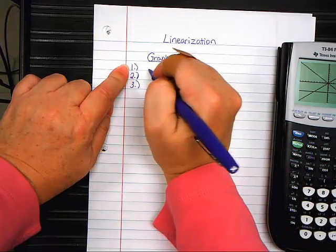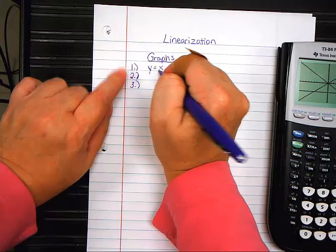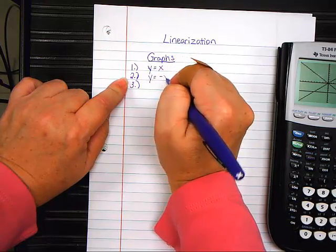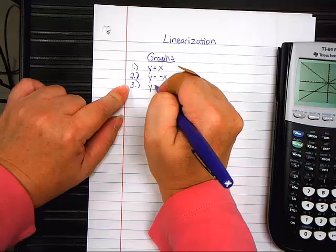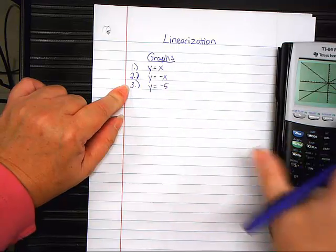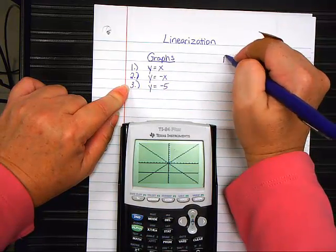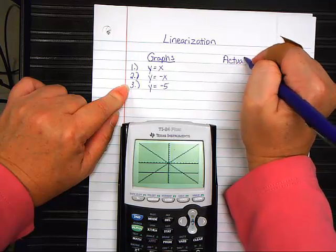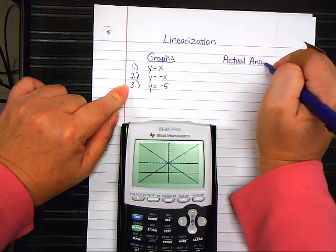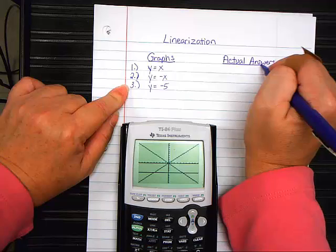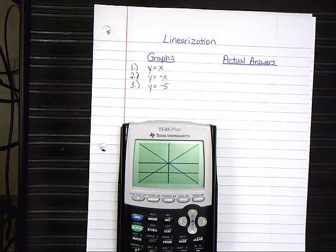What did you put for number 1? Y equals X. What did you put for number 2? Y equals negative X. What did you put for number 3? Y equals negative 5. Every one of you got a 0 on this quiz.